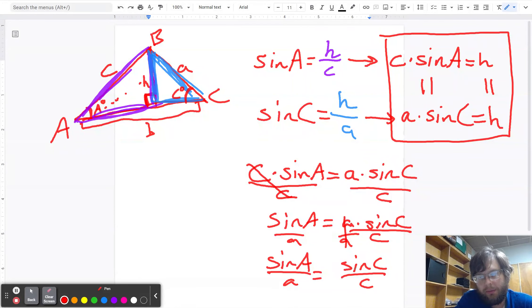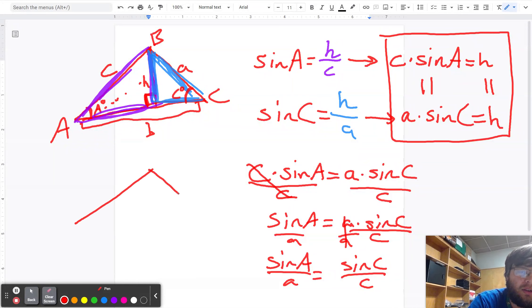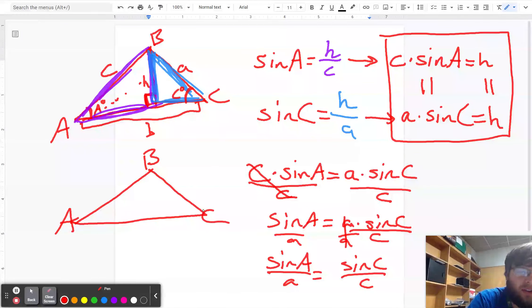Now there was nothing special about the sides A or C. I just happened to draw my triangle that way. And I could draw a similar sort of triangle where I could relate the sides A and B. If I just, instead of drawing the height the way that I drew it there,